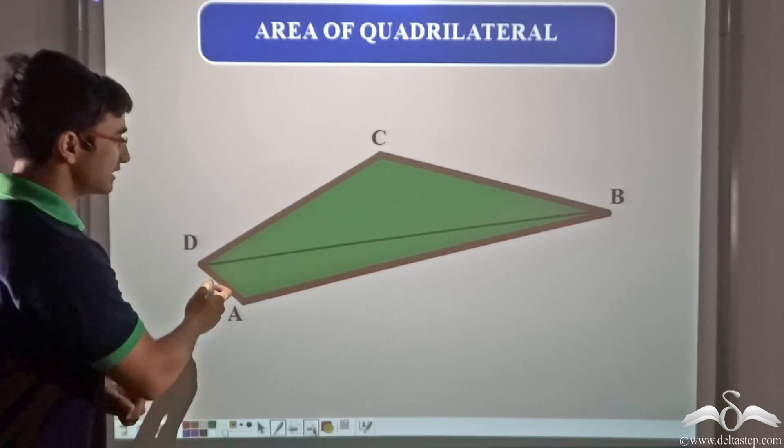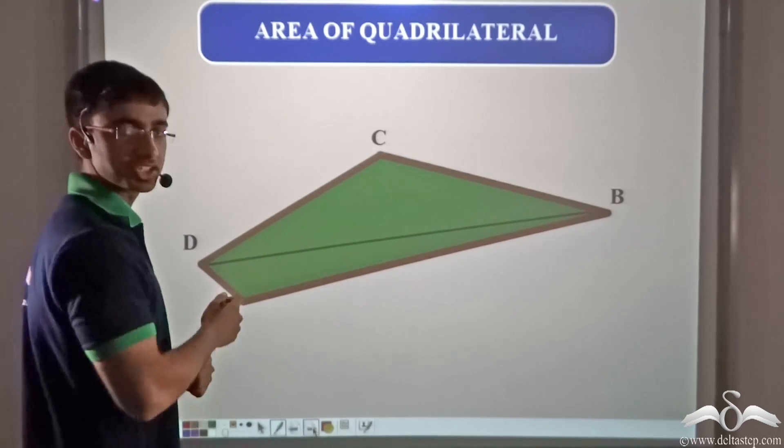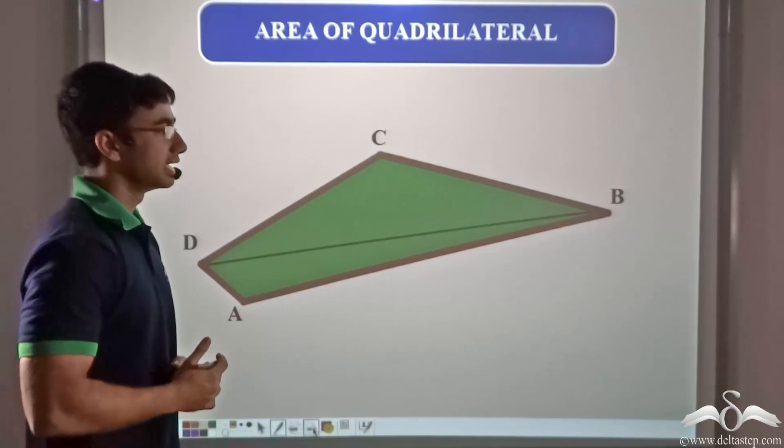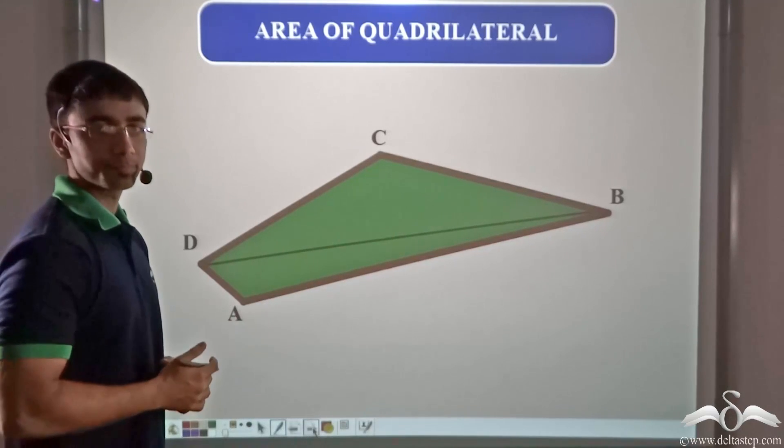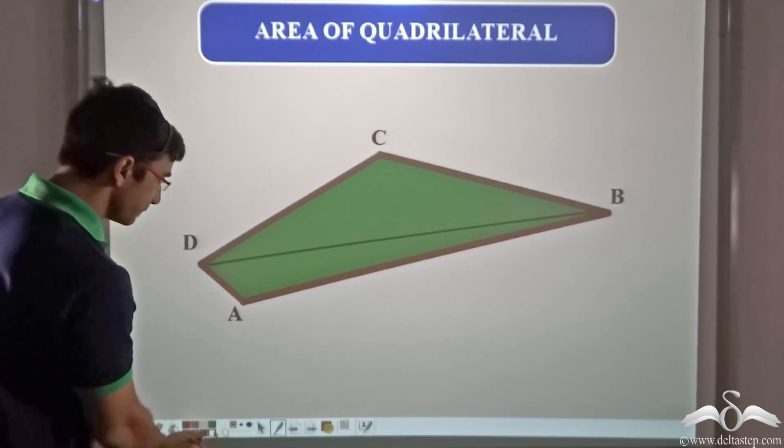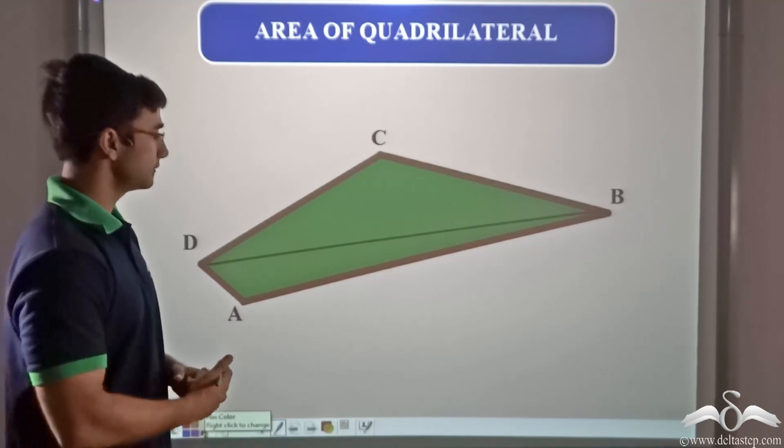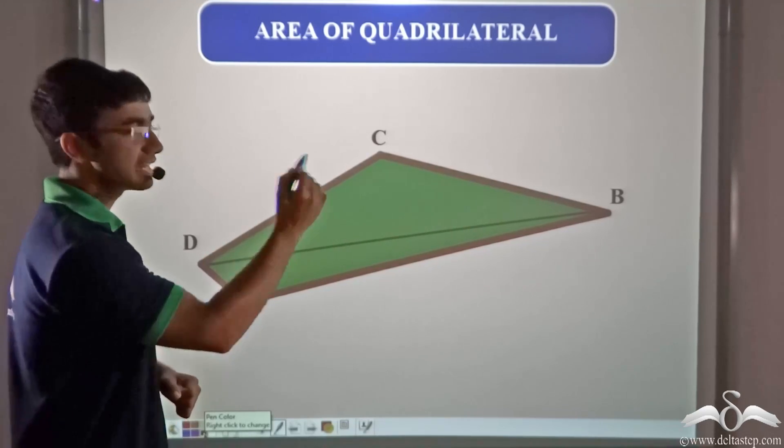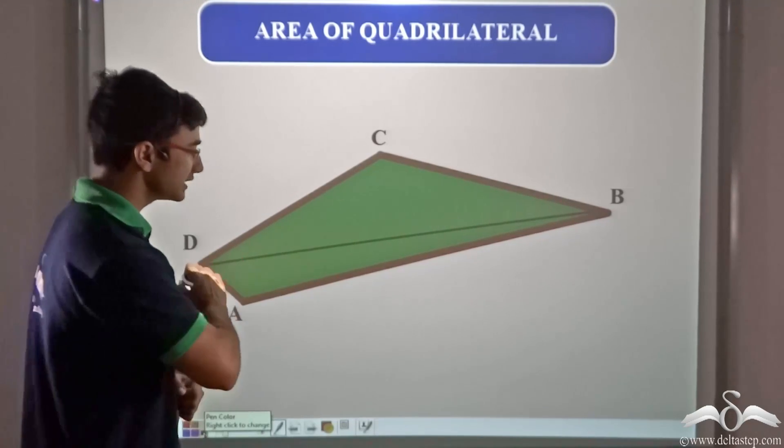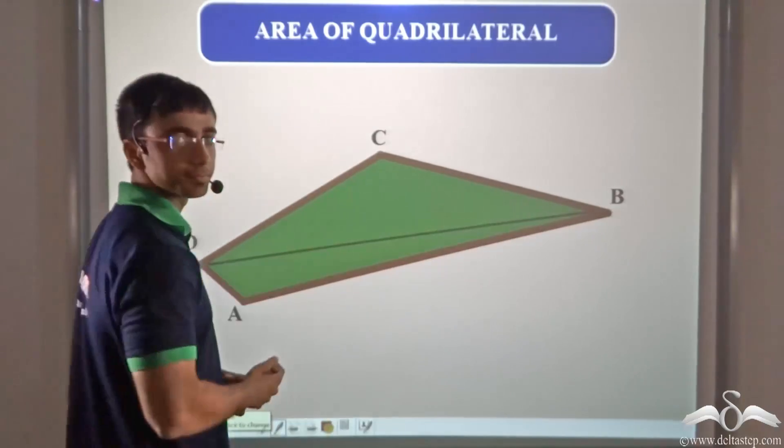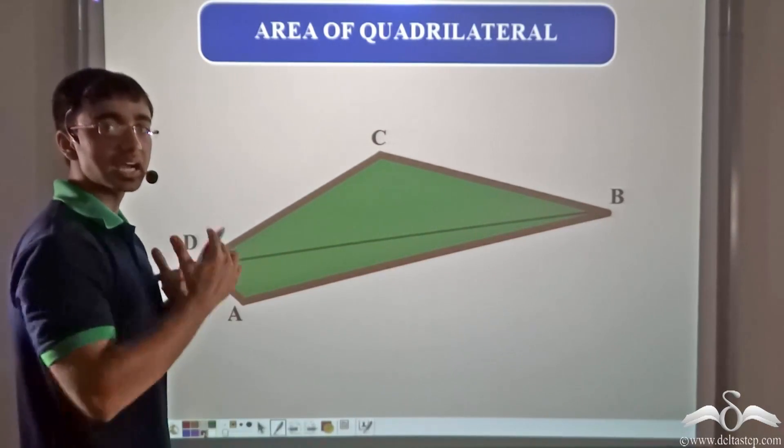In order to put a net on this particular quadrilateral plot ABCD, he has to find out the area. Now how to find out the area? The area can be found out in a very simple way. Firstly, we consider the two vertices B and D and join them with a straight line, as you can see.